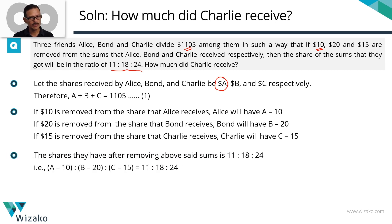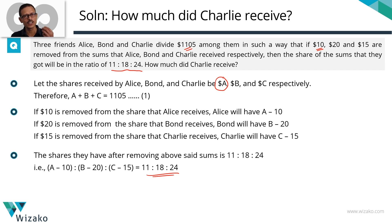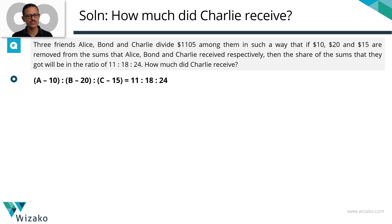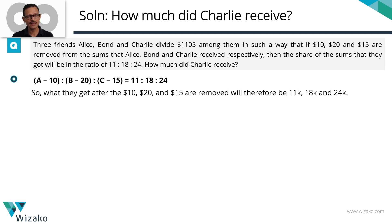So A minus 10 to B minus 20 to C minus 15 — we have removed these sums and checked the ratio of what is remaining, and that ratio works out to 11:18:24. This ends the crux of converting the word problem into a ratio. Solving this ratio is very simple: A minus 10 is 11k, B minus 20 is 18k, and C minus 15 is 24k. We are assigning a factor K.